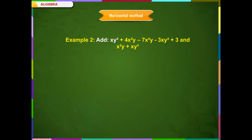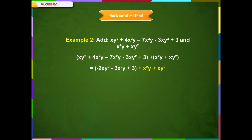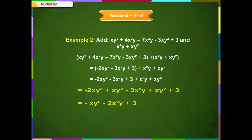Example 2 (Horizontal Method): Add xy² + 4x²y, −7x²y − 3xy² + 3, and x²y + xy². Arranging like terms together and adding: −2xy² − 3x²y + 3 + x²y + xy². The required addition is computed by grouping like terms.